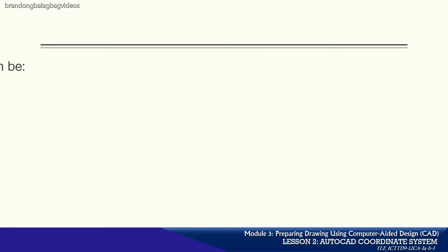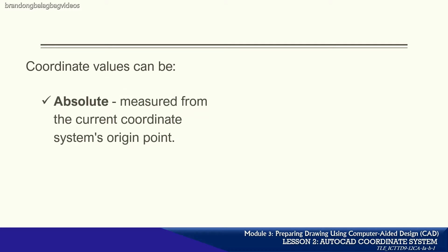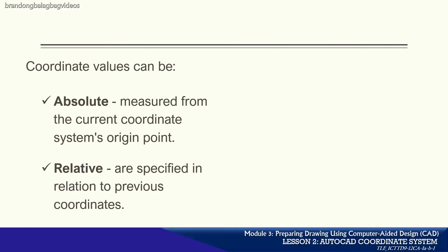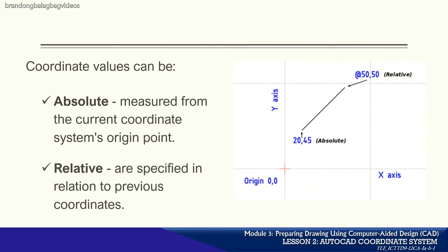When a command prompts you for a point, you can use the pointing device to specify the point, or you can enter its coordinates. Coordinate values can be absolute, which are measured from the current coordinate system's origin point, or relative, which are specified in relation to the previous coordinates. With both Cartesian and Polar coordinates, you can enter absolute coordinates based on the origin, or relative coordinates based on the last point specified.